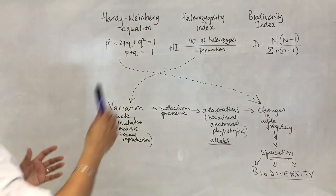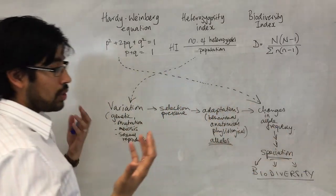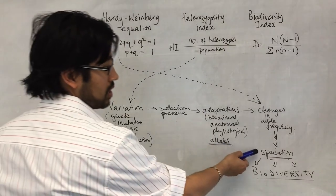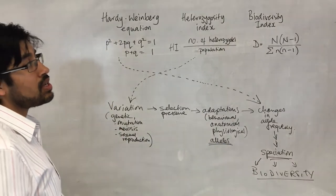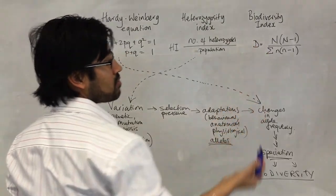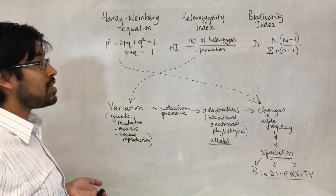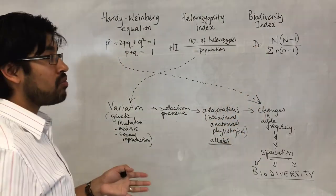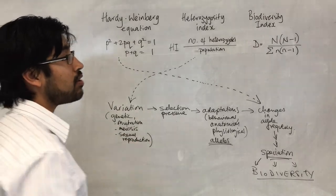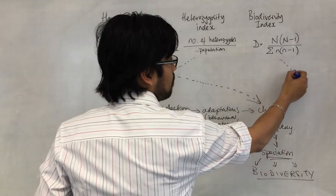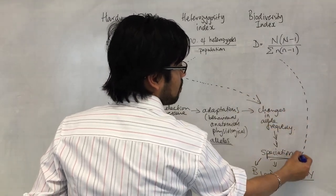Finally, we have the biodiversity index. If we get speciation and we get lots of different species, that essentially is where the biodiversity index comes in. It's telling you about the number of individuals and the number of different species in a particular area, and that's where the biodiversity index comes in.